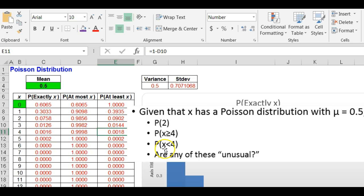What is the probability that x is less than four? That is, at most three, which is 0.9982.